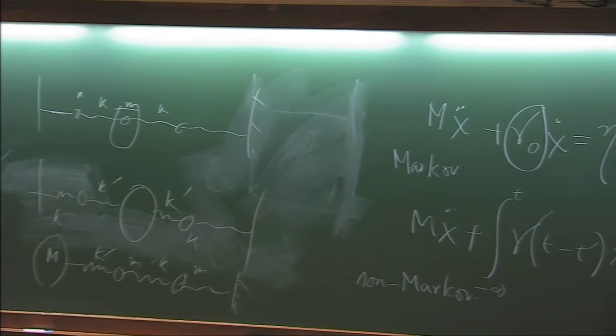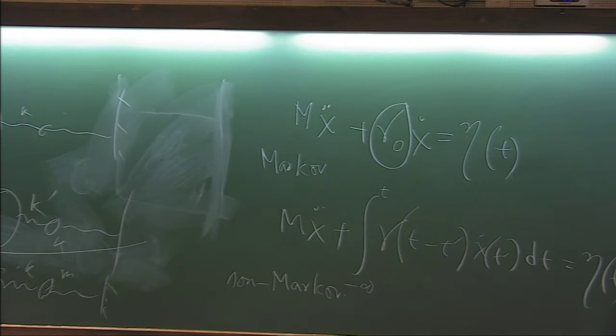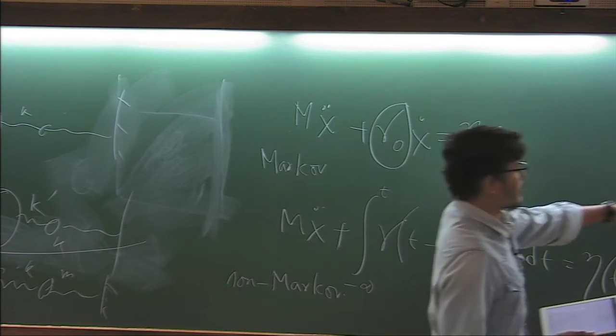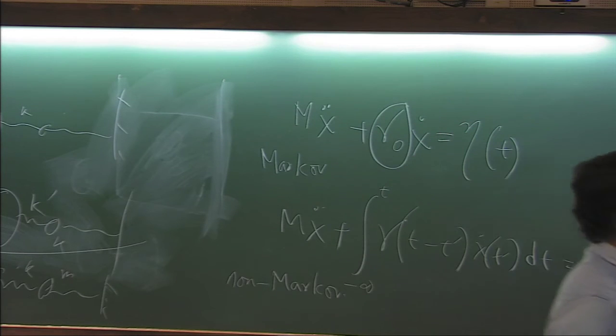So what is the form of gamma if I treat this model? Question is, does it look like ohmic? Does it look like Drude? Or is it something else? So answer is, it is completely different.